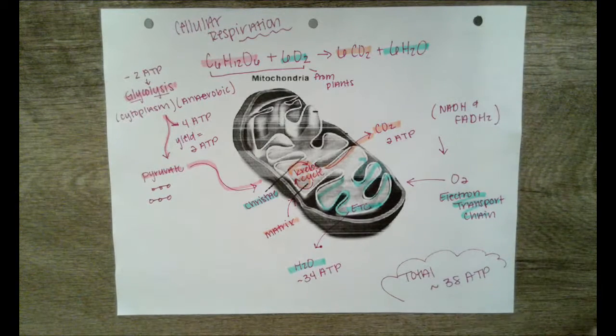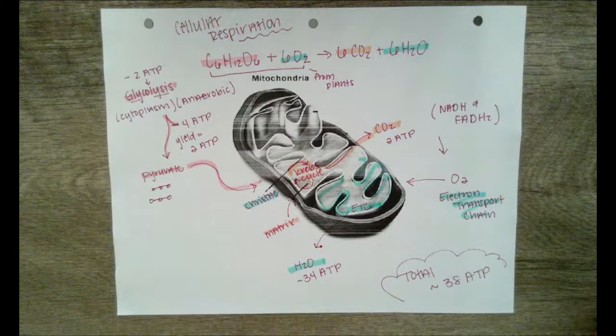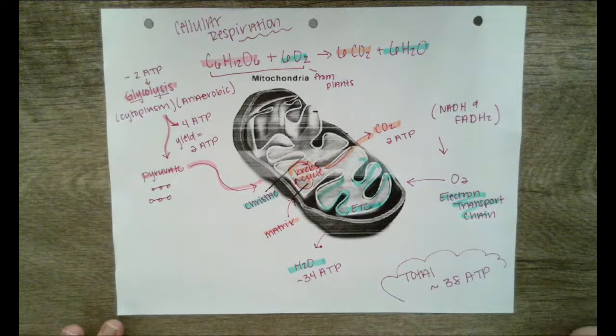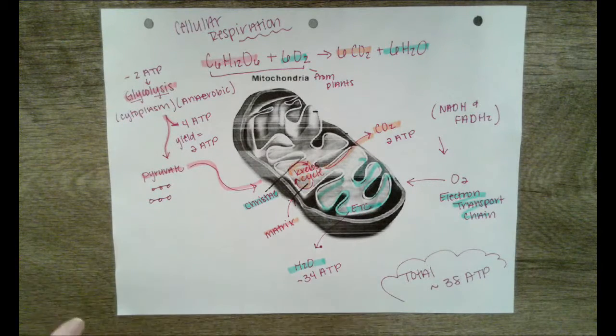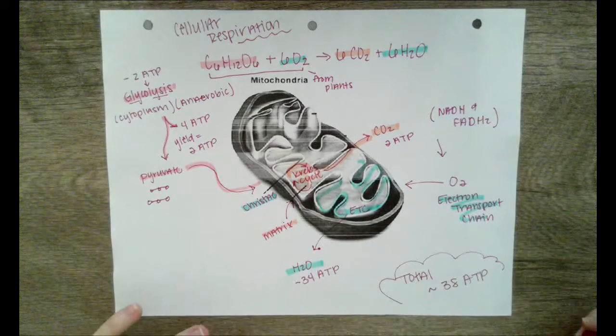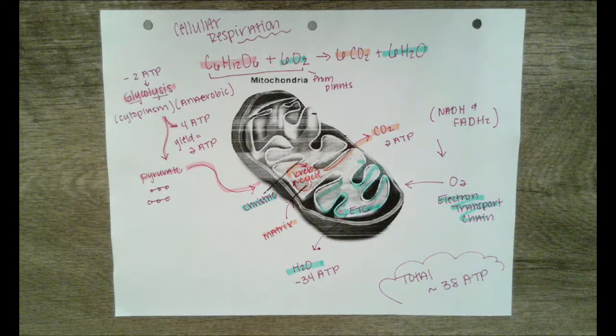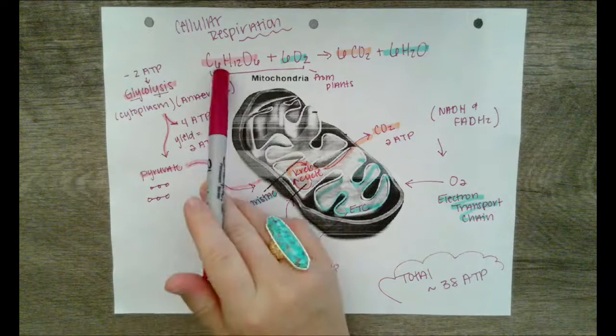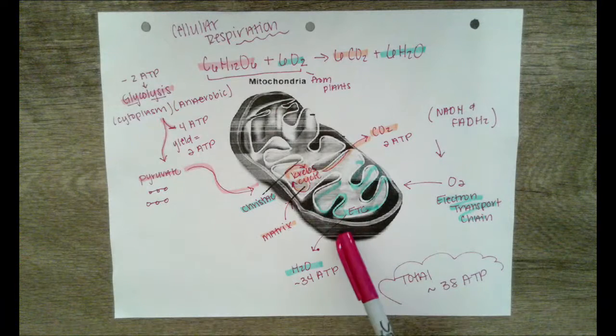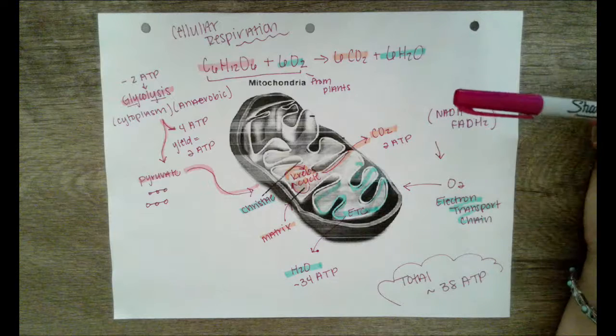Cellular respiration is the process that takes food and turns it into usable energy. We have our equation right up here at the top, very similar to photosynthesis, except the opposite is happening. We have glucose and oxygen entering into the mitochondria, and it's going to produce carbon dioxide and water.